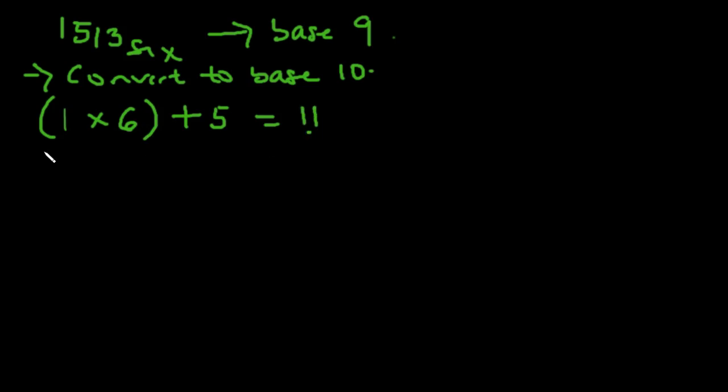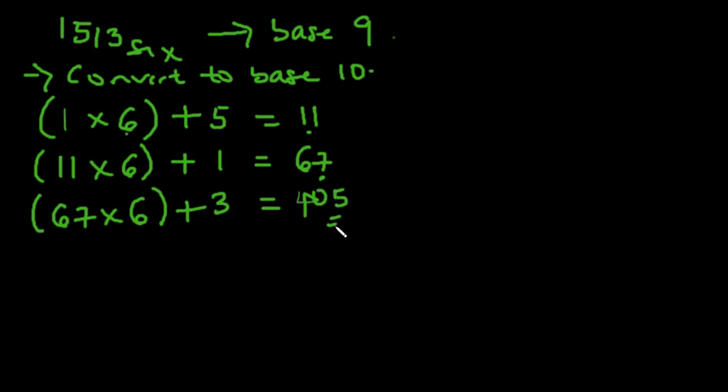So I pick this 11 answer here, 11 multiplied by the given base, that's 6, plus the next number here is 1. So we have 66 plus 1, that's 67. So we pick the answer, 67 multiplied by the given base, which is 6, plus the next number, which happens to be the last number, that's 3. That's 402 plus 3, that's 405. And this is the answer, 405 in base 10.